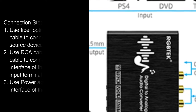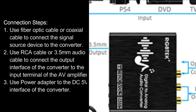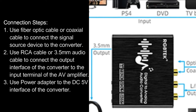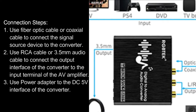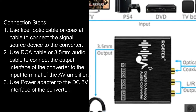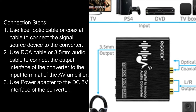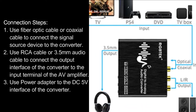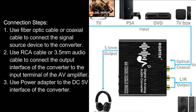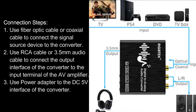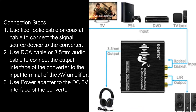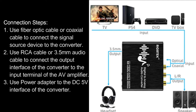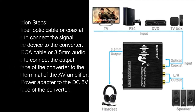Connection Steps: 1. Use fiber-optic cable or coaxial cable to connect the signal source device to the converter. 2. Use RCA cable or 3.5mm audio cable to connect the output interface of the converter to the input terminal of the AV amplifier. 3. Use a power adapter to connect to the DC 5V interface of the converter.